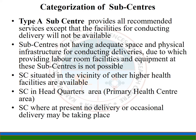There are two types of subcentres: Type A and Type B. Type A subcentres do not have adequate space and physical infrastructure for conducting deliveries, due to which providing labor room facilities and equipment at this facility is not possible. They are situated in the vicinity of higher health facilities and are located in headquarters areas within the primary health center area.